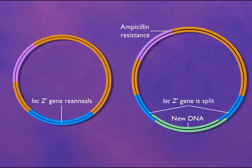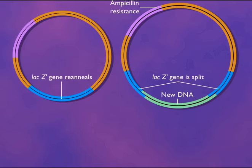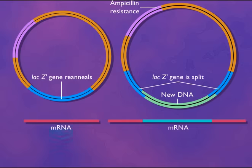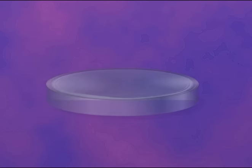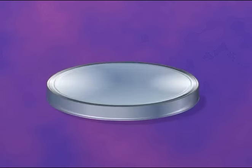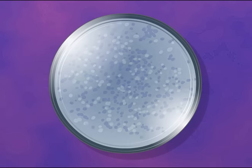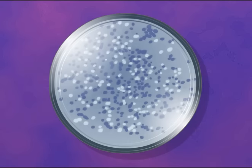A common second marker is the LAC-Z gene, which codes for the enzyme beta-galactosidase. Beta-galactosidase can cleave a colorless chemical called X-gal to form a blue compound.